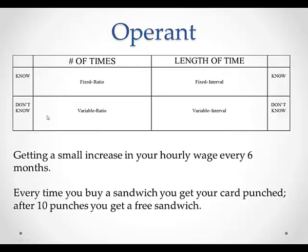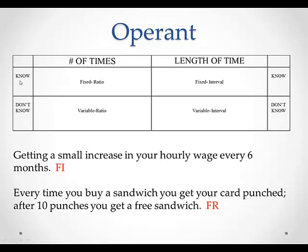Here are our reinforcement schedules — the same chart you had in class. Getting a small increase in your hourly wage every six months, and every time you buy a sandwich you get your card punched; after 10 punches you get a free sandwich. Getting a small increase in your hourly wage every six months is fixed interval — it's interval because you have to wait a length of time, and it's fixed because it's every six months, so you know. Every time you buy a sandwich your card gets punched; after 10 punches, free sandwich — this is fixed ratio. You get the reward after a number of times, and you know the number: it's 10.